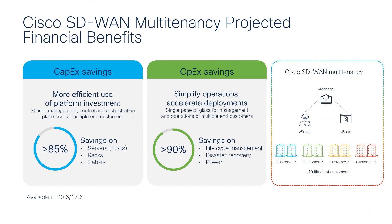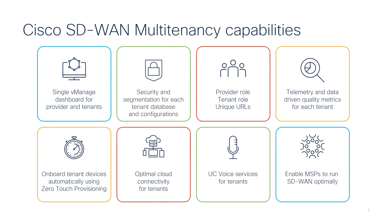MSPs can start small with a three-node vManage cluster and expand to a six-node cluster as needed to accommodate a multitude of tenants and thousands of devices on the same SD-WAN network management system. MSPs can also choose to deploy controllers in their own data centers or request Cisco to deploy and manage the controller infrastructure in Cisco Cloud.